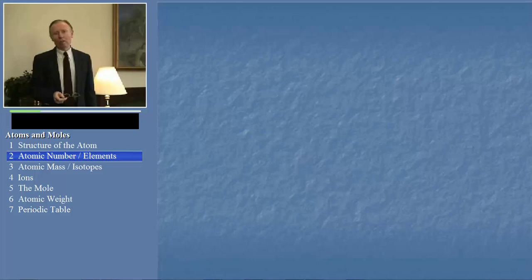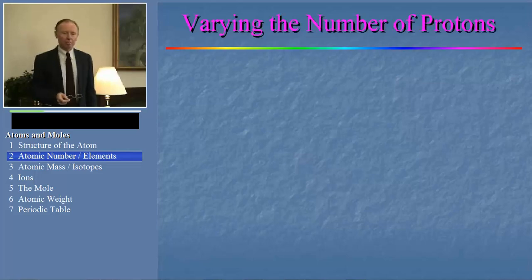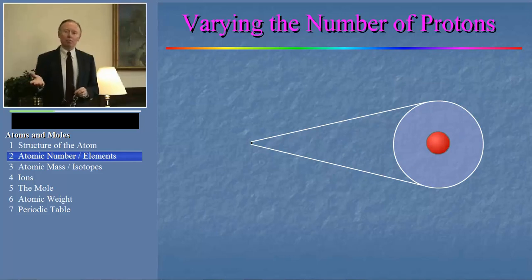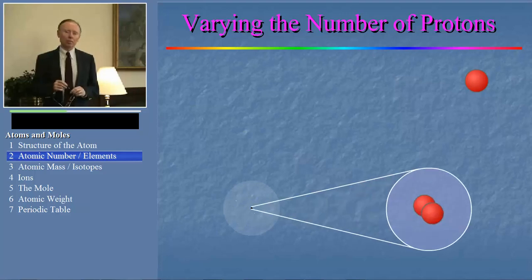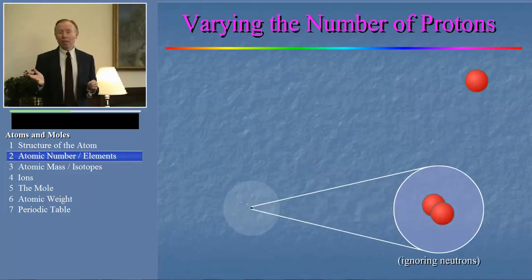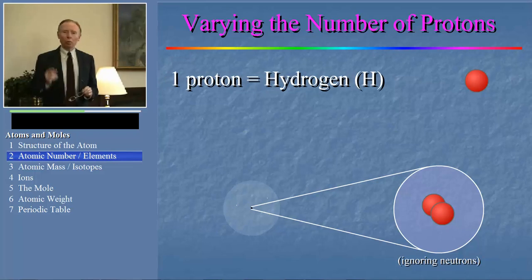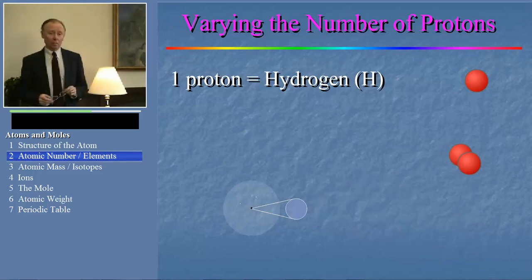Let's talk first about what happens when we vary the number of protons in the nucleus. We'll start with the simplest atom, which has one proton in the nucleus. To be neutral, this atom has one electron in the electron cloud. If we then add one more proton, and one more electron to keep the atom neutral, the chemical nature of the atom changes dramatically. That's why each kind of atom with a unique number of protons has a unique name. For example, an atom that has one proton is called a hydrogen atom. An atom that has two protons is called a helium atom, and so on.